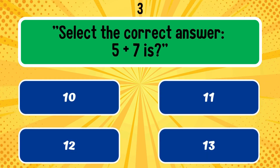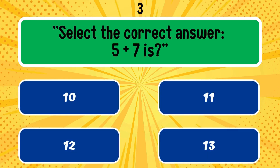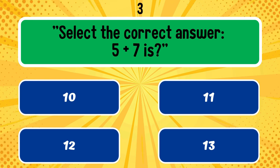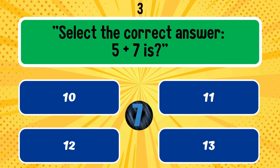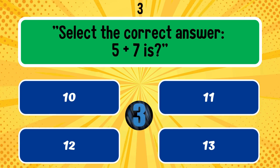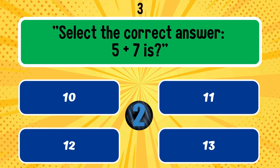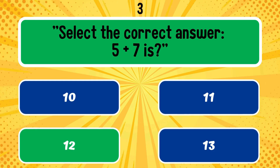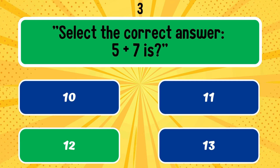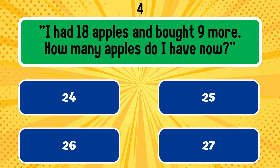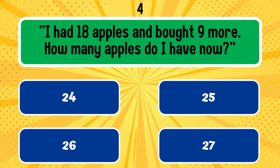Select the correct answer: 5 plus 7 is what? The correct option is 12. I had 18 apples and bought 9 more.